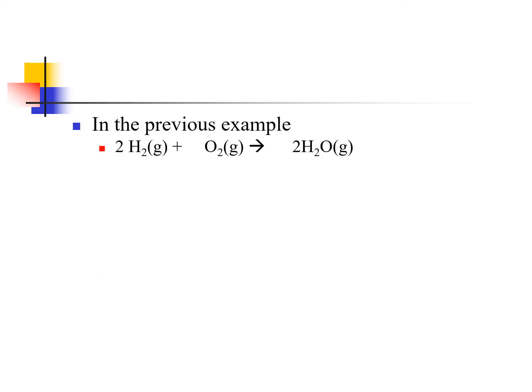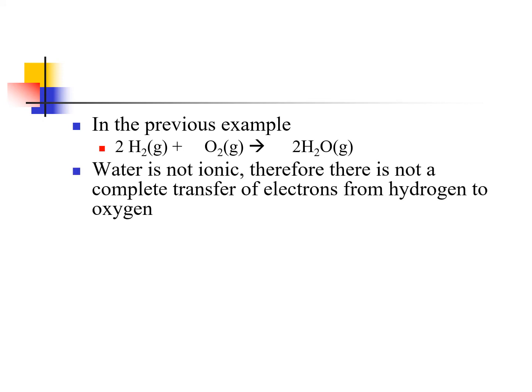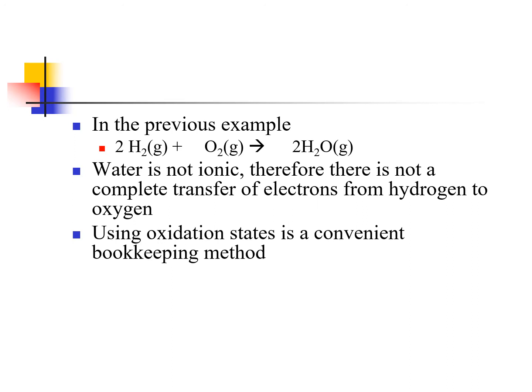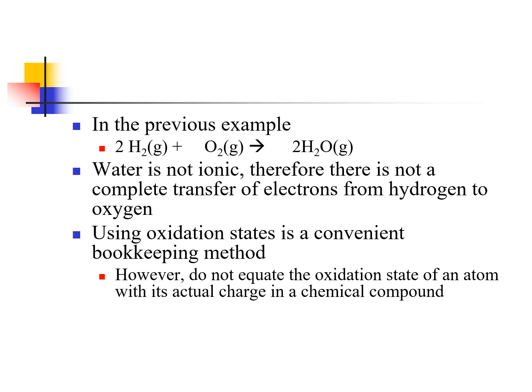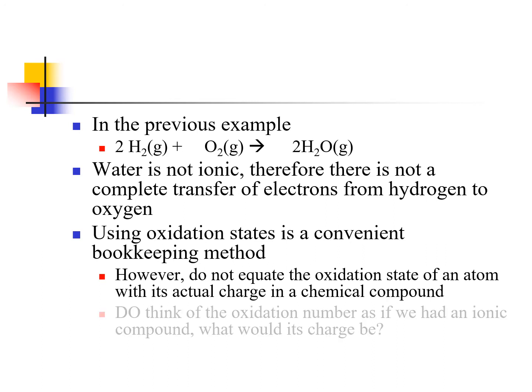Water is not ionic, so there is no complete transfer of electrons from the hydrogen to the oxygen. Oxidation numbers are a bookkeeping method — they're not saying these are the actual charges. What it's saying is: if this were ionic, what would the charges be? When we're dealing with molecular compounds, it's not saying this is the charge; it's saying if it were ionic, this is what the charge would be.